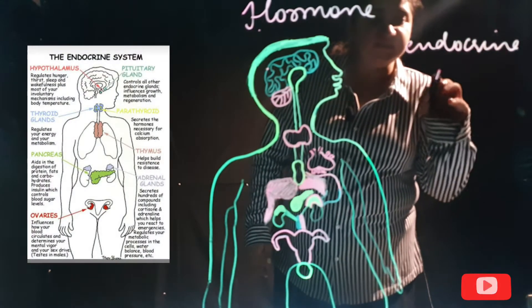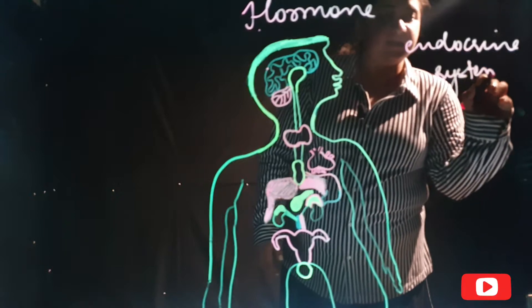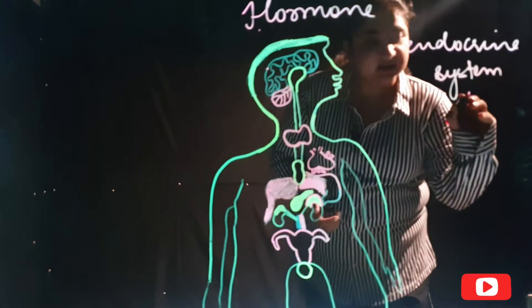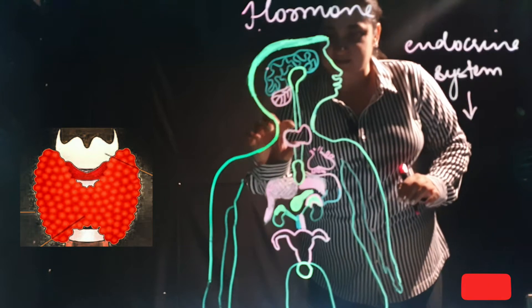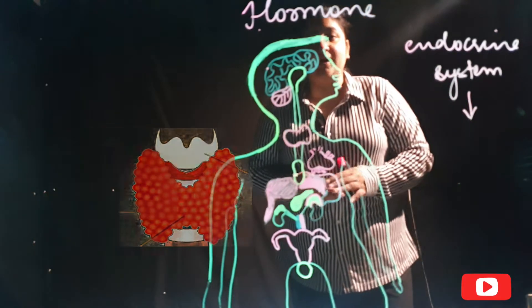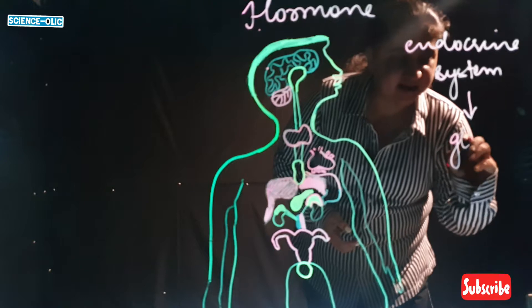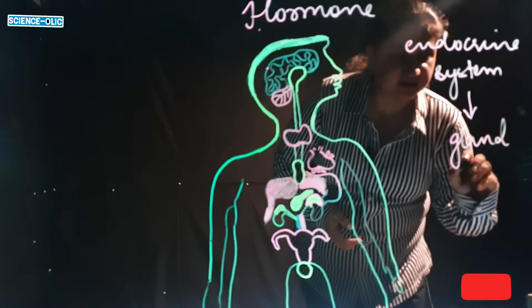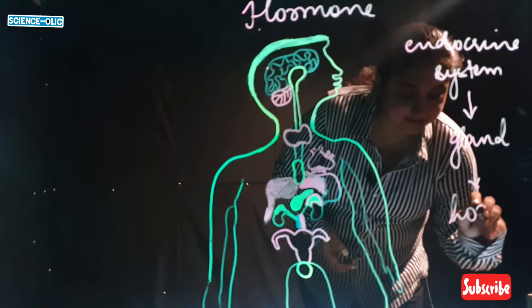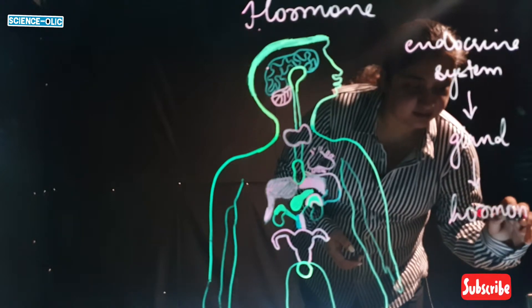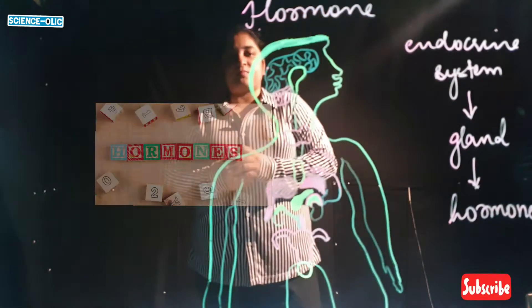What is inside this endocrine system? It consists of glands — the hypothalamus, thyroid, and others you might have heard of. All of these are glands which help to secrete the hormones.